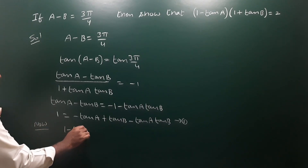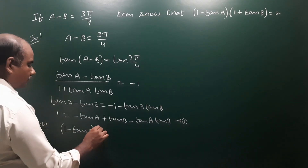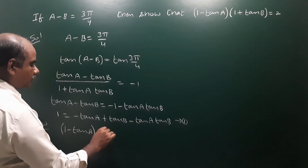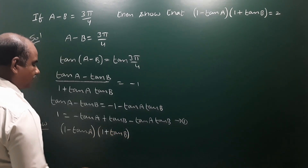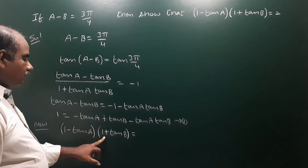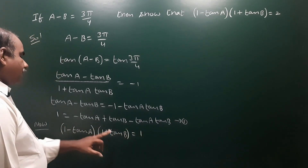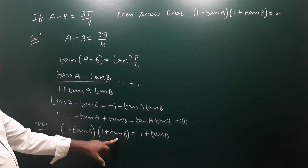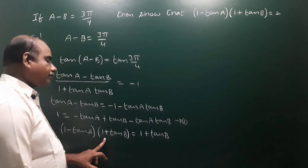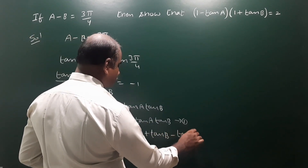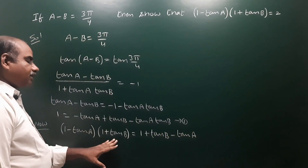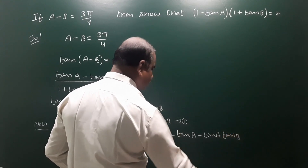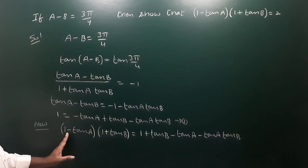Now expand (1 minus tan A) into (1 plus tan B): 1 times 1 equals 1, 1 times tan B equals tan B, minus tan A times 1 equals minus tan A, minus tan A times plus tan B equals minus tan A tan B.